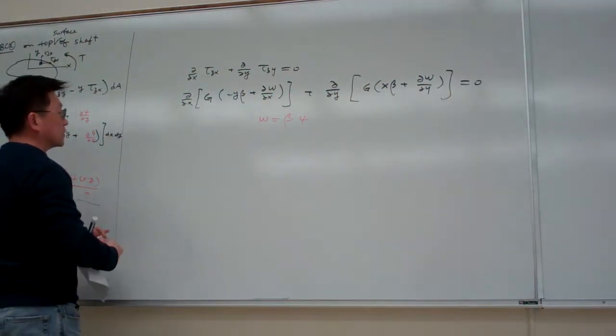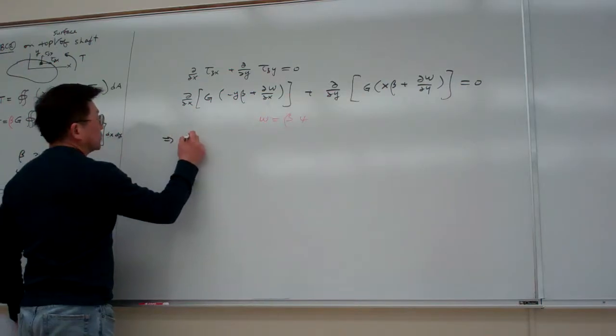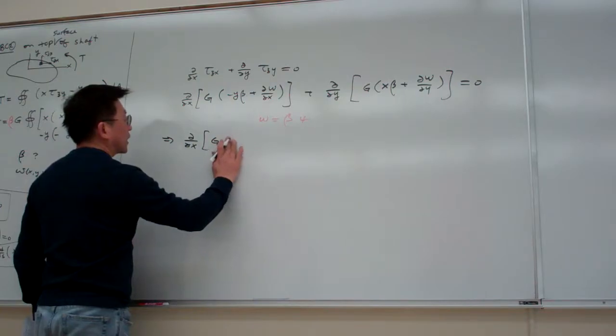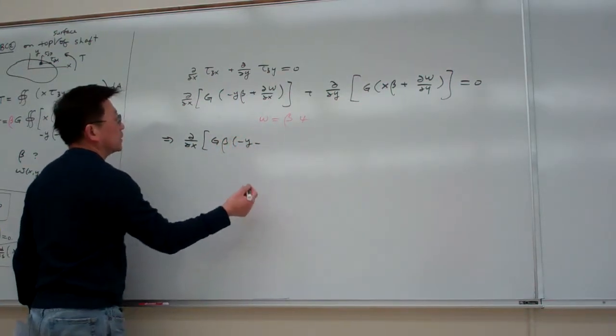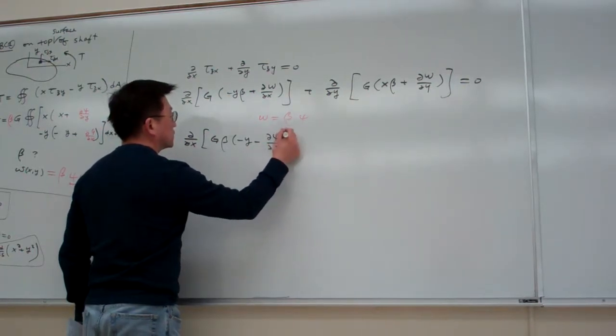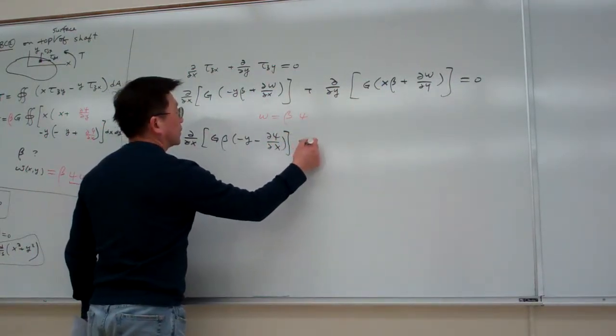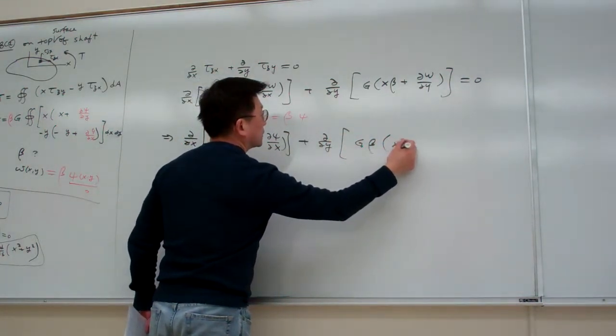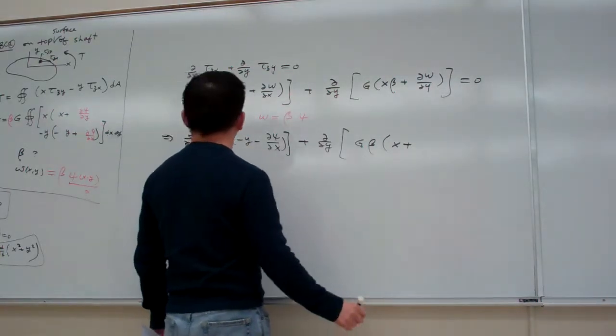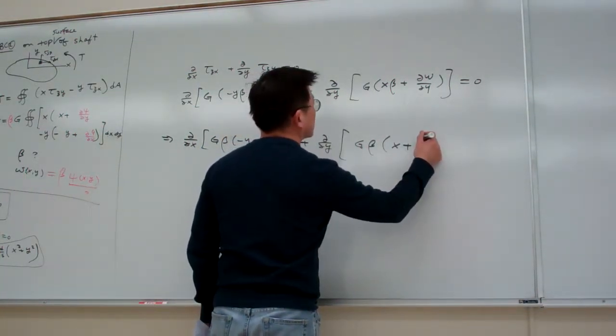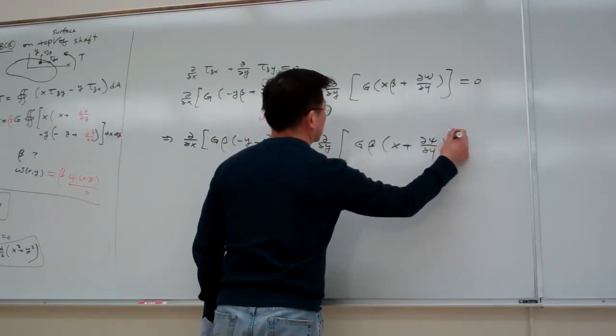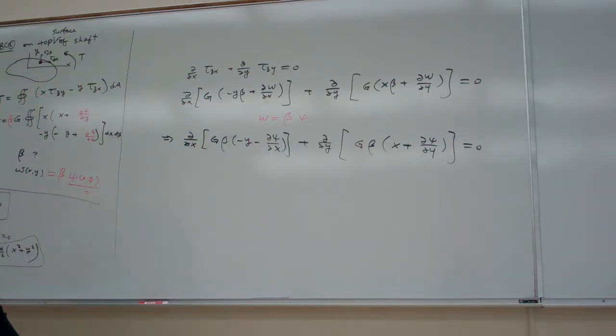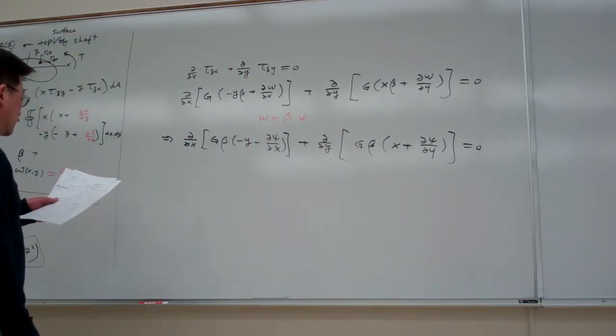So in the original form, we haven't replaced the warping function here yet. And now we're going to replace w equal to beta times psi. We plug in here, then we see basically that one becomes partial partial x, and g. And in this way beta can be out, minus, and partial psi partial x, plus partial partial y, g, beta out here, x plus...